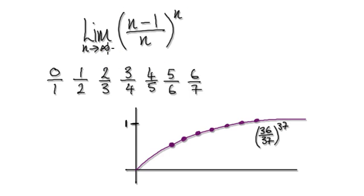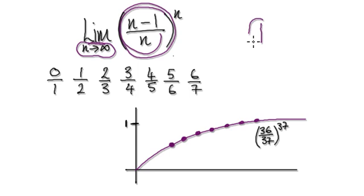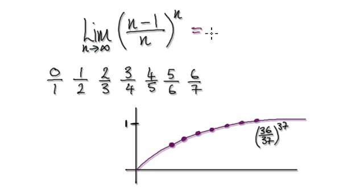Now, some of you might put up this argument where you say that if n heads towards infinity, then this whole thing here will head towards 1, and then 1 to the power of n is going to be 1. So some of you might say the limit is 1. But it doesn't work like that. It's not true.